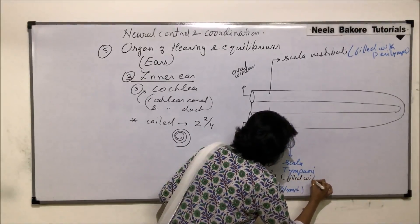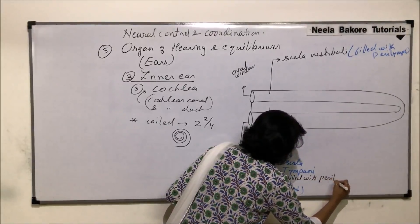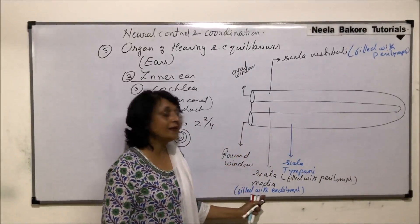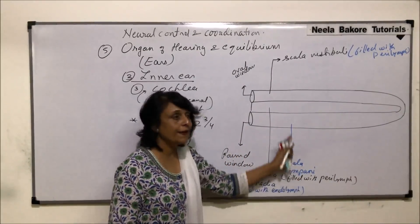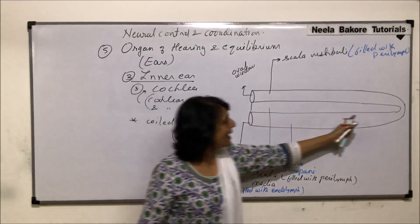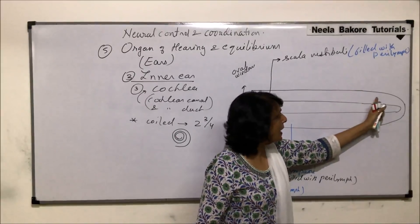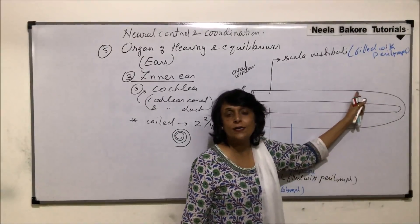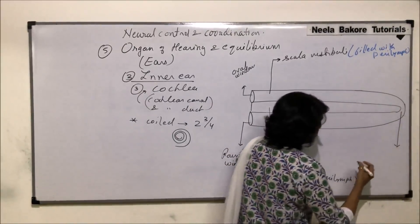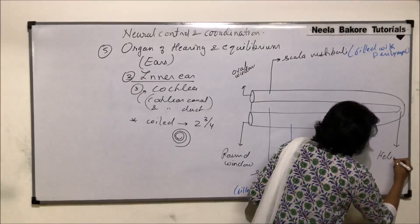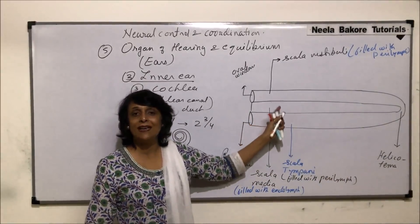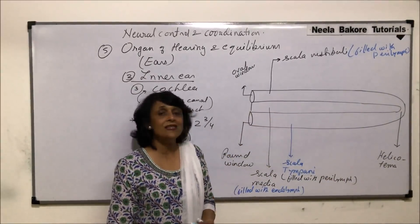So there are three compartments: the upper and lower are filled with perilymph and the middle one is filled with endolymph. The upper and lower compartments — scala vestibuli and scala tympani — are also connected at the tip by a narrow tube known as the helicotrema. Through this narrow connection the perilymph of both compartments is connected.